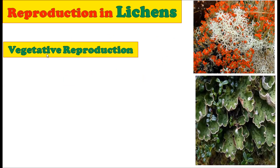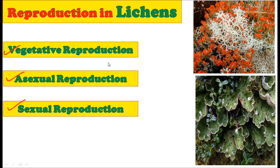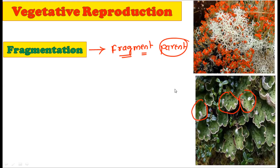Reproduction in Lichens occurs in various ways. The first is vegetative reproduction, then asexual reproduction, and sexual reproduction. In vegetative reproduction, the very first form is fragmentation. As you can see in this picture, this is the thallus of the lichens. Upon fragmentation, the fragments of this thallus when separated from the parent plant grow into completely new thalli. So by fragmentation of the vegetative parts of the lichen thallus, lichens can reproduce vegetatively.